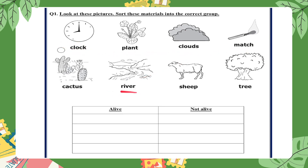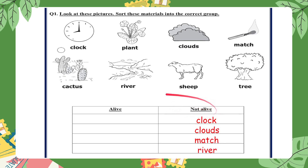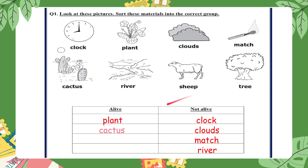So clock, clouds, match, and river all move because something moved them, but for the rest of the rules they cannot do them — therefore these things are not alive. A plant grows, and so the cactus, sheep, and tree can do all seven rules to be alive.